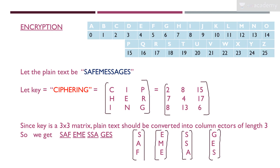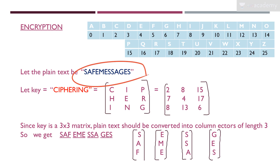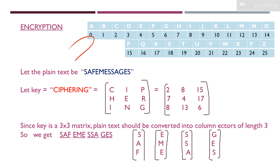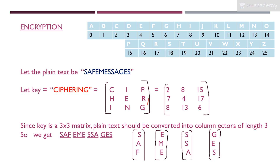First, we need a key and we apply it to our plain text. Let the plain text be 'safe messages' — this is the message we want to encrypt and keep secure from unauthorized disclosure. For the key, let's use the word 'ciphering.' We translate this key into a three by three matrix: C I P H E R I N G.